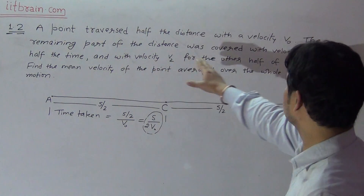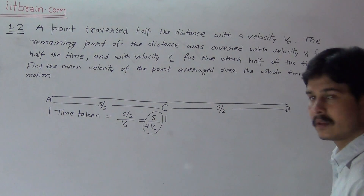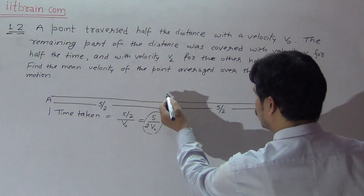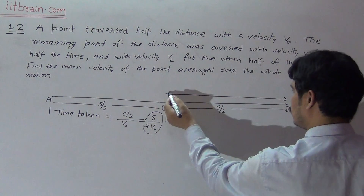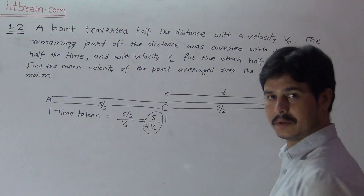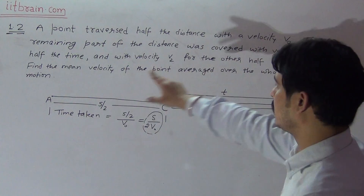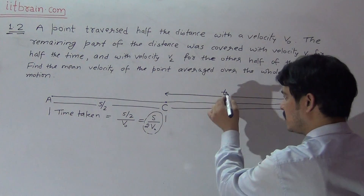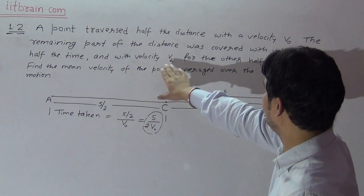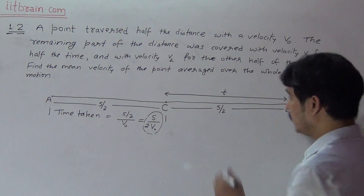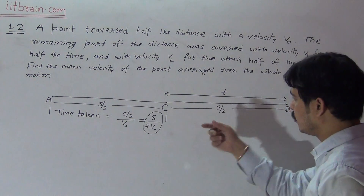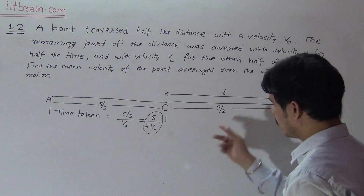Now for the remaining part: the remaining distance CB was covered with velocity V1 for half the time and velocity V2 for the other half. Let us suppose the total time taken for the journey from C to B is T. Then for time T/2, the particle moves with velocity V1, and for the remaining T/2, it moves with velocity V2.